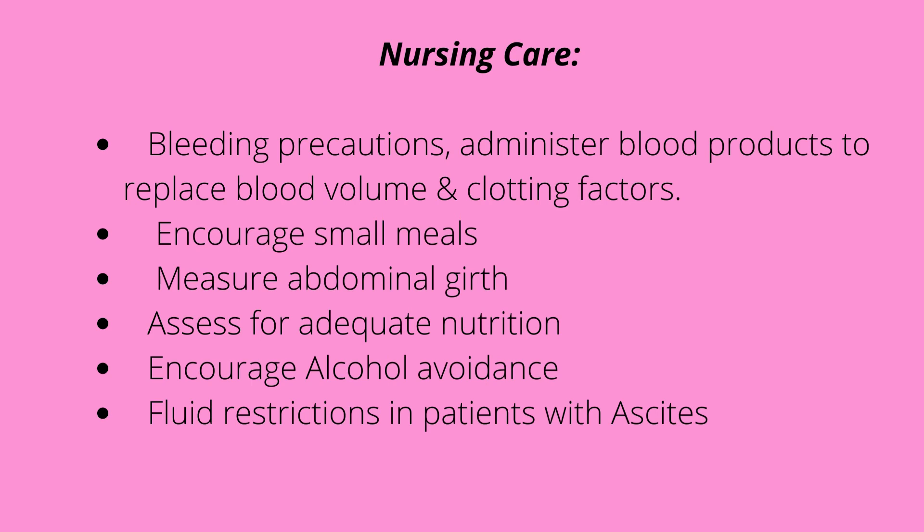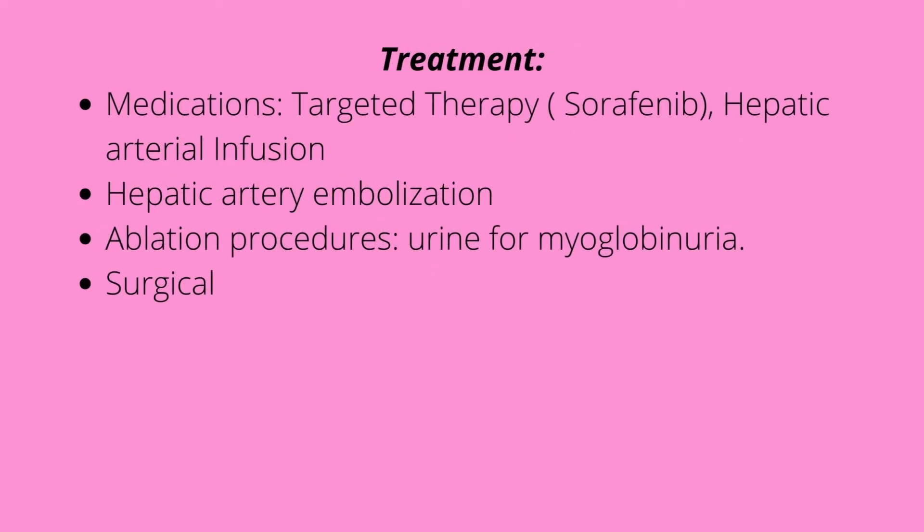Ascites is the abdominal retention of fluid — the stomach looks like water is inside it. We don't want them to continue retaining this fluid or increasing its volume, because the more fluid they retain, the higher the chance of respiratory involvement and their respiratory system becoming compromised as the lungs are not opening effectively. For treatment, we can give medications like targeted therapy, hepatic arterial infusion, and hepatic arterial embolization. We can also do ablation procedures. With hepatic arterial embolization, we monitor for bleeding after the procedure. With ablation procedures, we monitor for hypothermia, bile leakage, hemorrhage, and myoglobinuria.